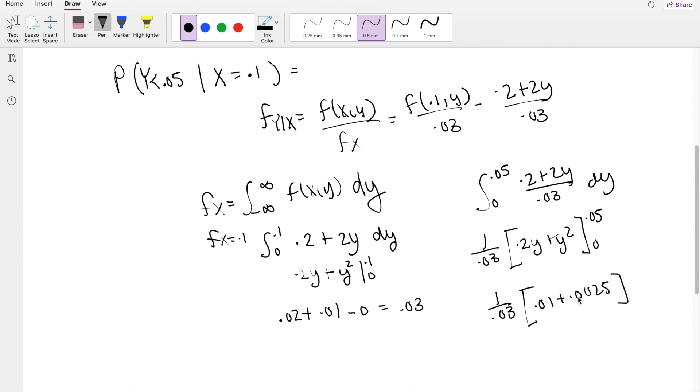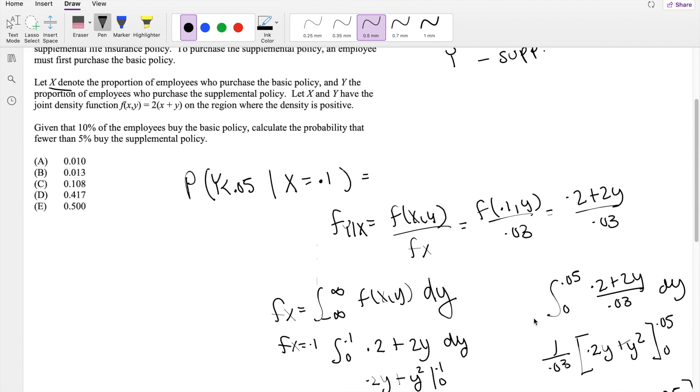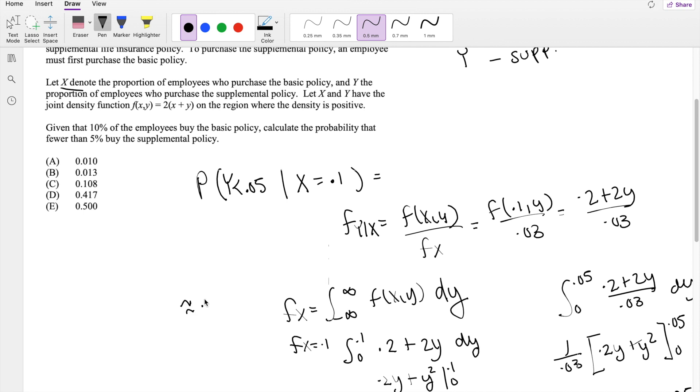So plugging that into the calculator, you get approximately equal to 0.416666 repeating, which is approximately equal to 0.417, our answer, D.